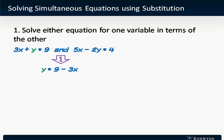In this case, it's easiest to use the first equation and solve for y in terms of x because the coefficient on y is 1. That makes it easy to rewrite the equation as y equals 9 minus 3x.